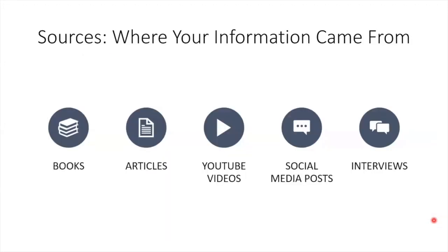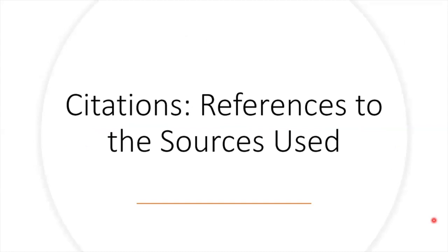What is a source? Often, when you're reading a research paper assignment, you'll notice that you're required to use a certain number of sources. A source is just the place where you found information. There's a wide variety of potential sources out there, from newspaper articles, to YouTube videos, to scholarly journal articles, to personal interviews. Finally, what's a citation? A citation is a reference to a source that you consulted for information in the course of writing your research paper.